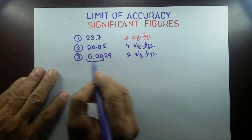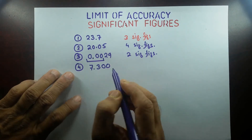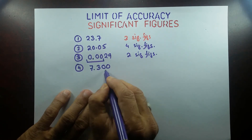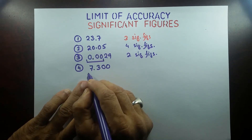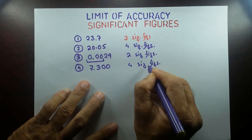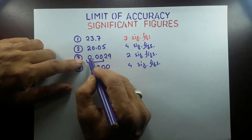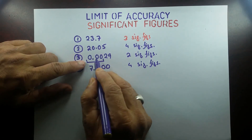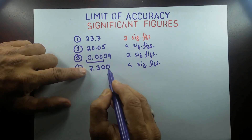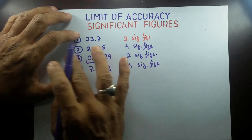Number four: if I have 7.300, in this case the zeros are after the decimal point and after non-zero digits — they are significant. This is a big difference: zeros after a non-zero digit following the decimal point are significant, whereas leading zeros before the first non-zero digit are non-significant. So 7.300 has five significant figures.